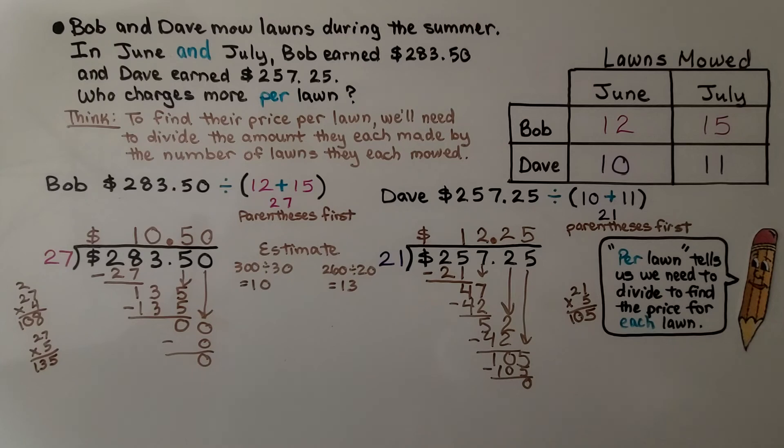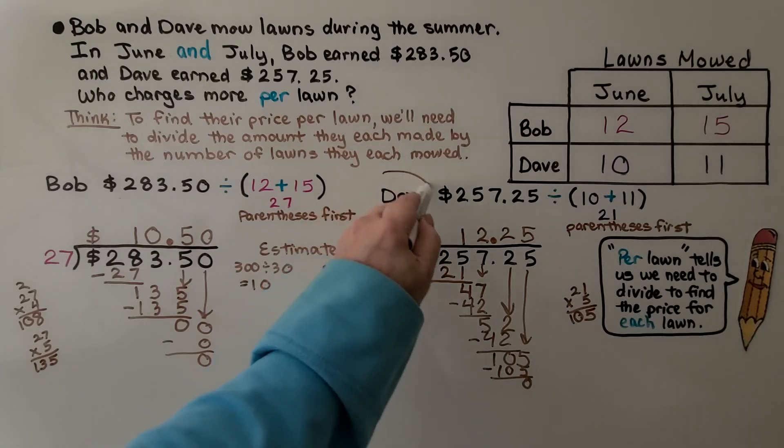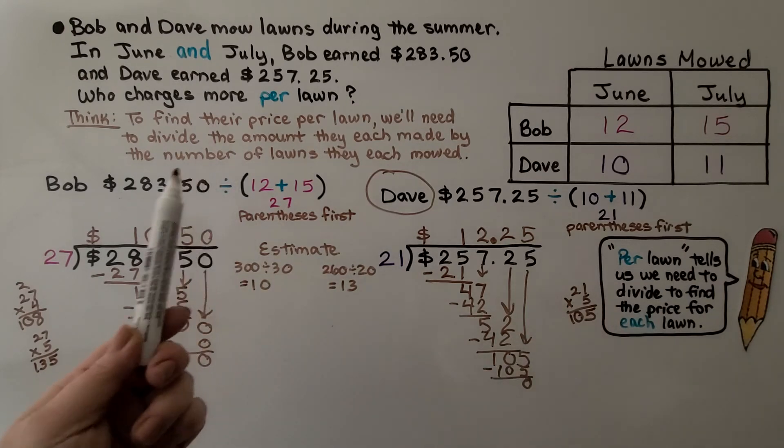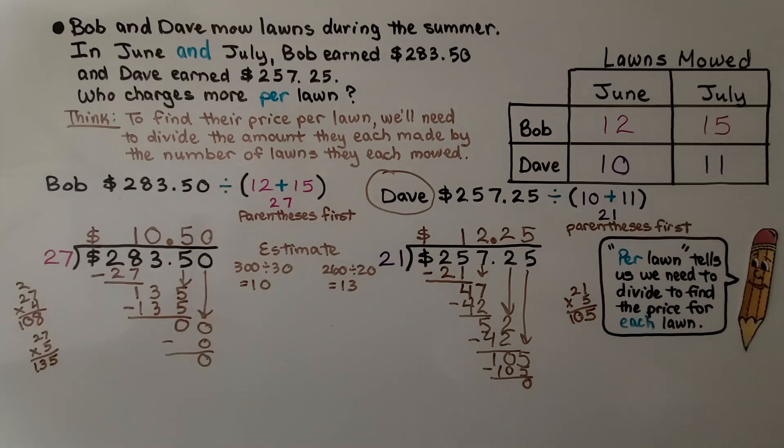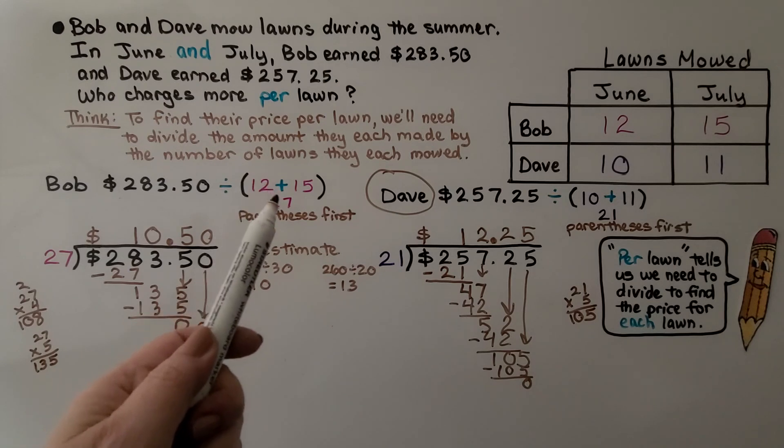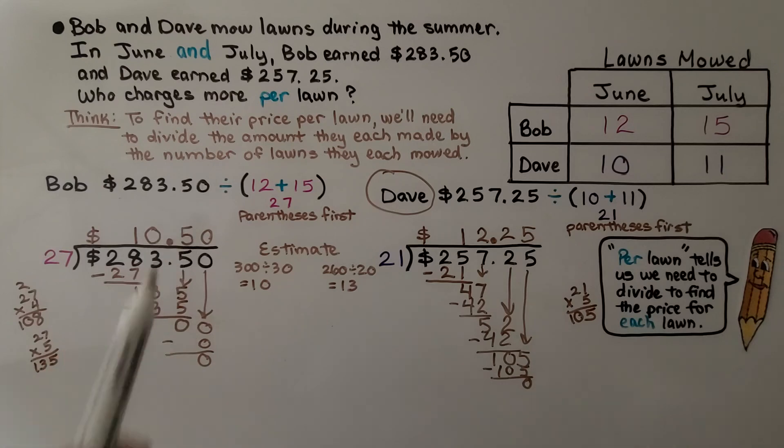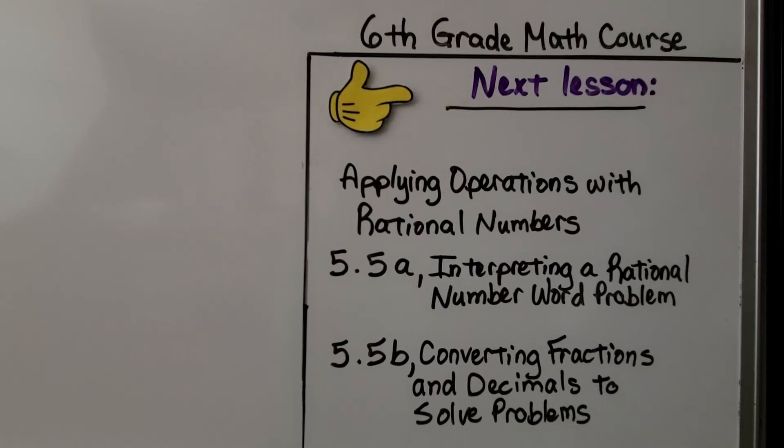So, who charges more? Dave does. We found our answer. So be careful because in this problem, per lawn tells us we need to divide to find the price for each lawn. Per means each. It means for each one. So if you see you need to add two amounts together or subtract, you can write that in parentheses and then figure out if you need to multiply that amount or divide that amount.